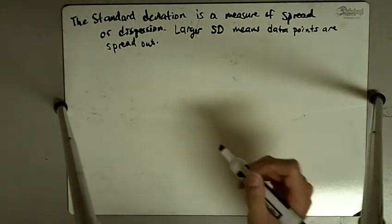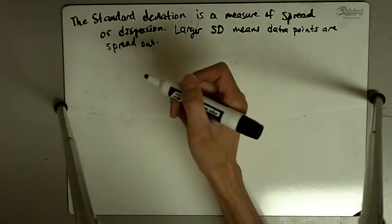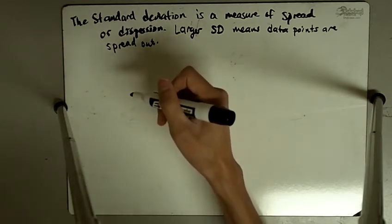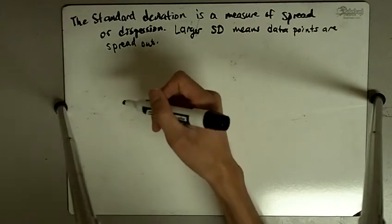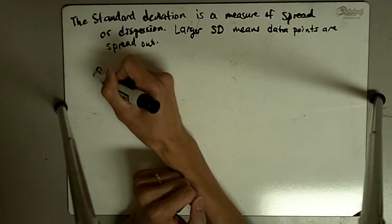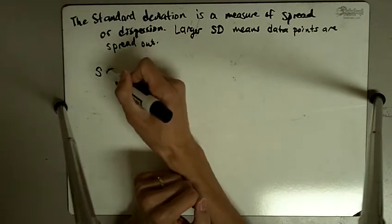Now to find the standard deviation, I'm going to write down a formula and it might be a little intimidating looking at first, but the steps in and of themselves are not too difficult. The symbol we use for standard deviation of a sample is S.